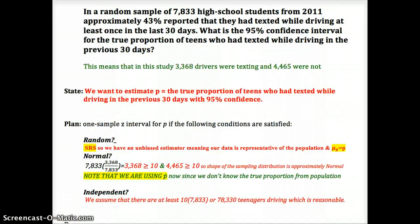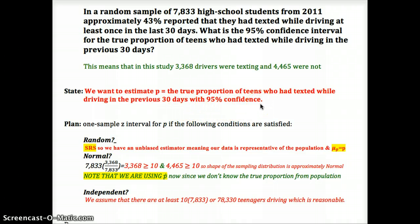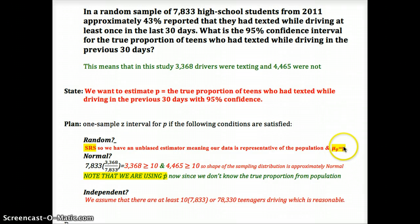Here's the problem from the beginning of the lesson: 7,833 high school students from 2011, approximately 43% reported texting while driving at least once in the last 30 days. We want the 95% confidence interval for the true proportion. State: we want to estimate p, the true proportion of teens who had texted while driving in the previous 30 days, with 95% confidence. Random: we have an SRS, so we have an unbiased estimator and the mean of our sampling distribution of p-hat equals the true proportion.